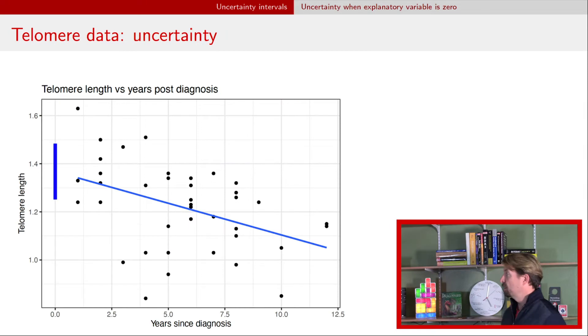If we look at this as a picture, we get something that looks like this. So this is our telomere data example. We have the telomere length on the y-axis, that's our response. We have years since diagnosis on the x-axis. We have our regression line, the blue line. And on that far left side, we have a line segment, and that line segment is that intercept with its uncertainty. This says when years since diagnosis is zero, we expect the telomere length to be about 1.4, but there's some uncertainty given by that line.